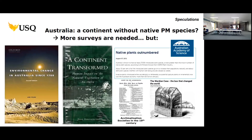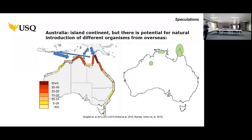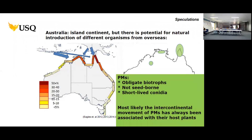Australia is an island continent, but good studies show that the northern coast is exposed to microbes that can reach Australia by wind. However, all powdery mildews are obligate microbes with short-lived spores. So even if spores reached the Australian continent, if the host plants were not present, they would not survive. Most likely all 42 species were introduced together with infected plant material.